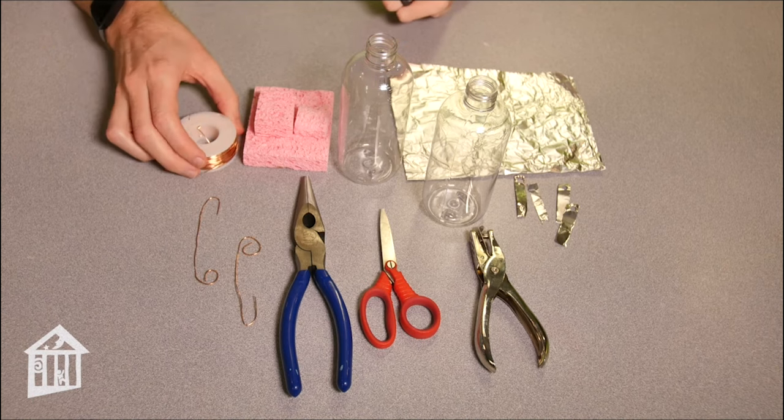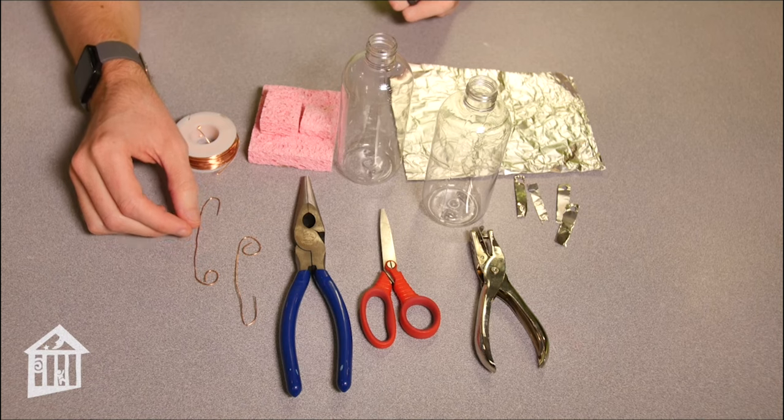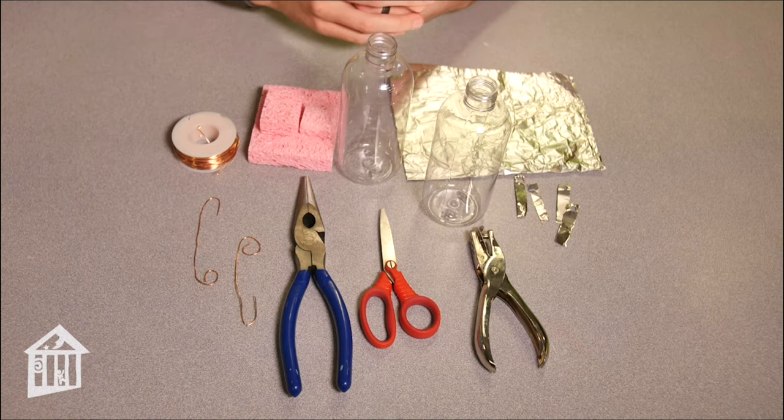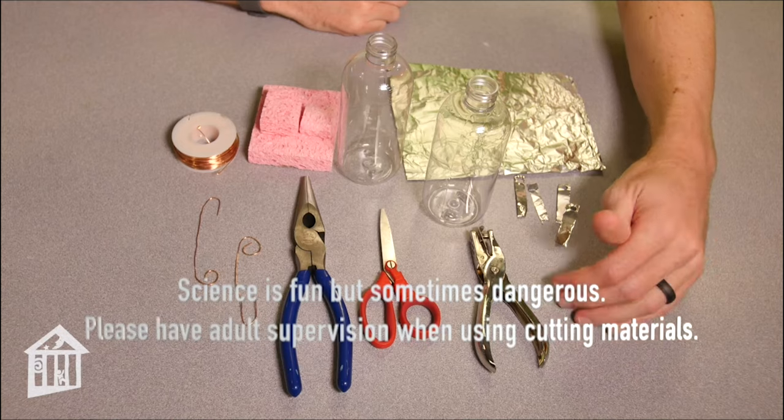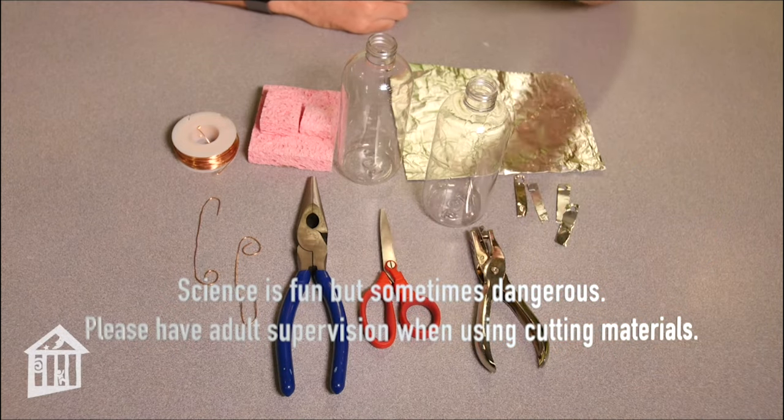And then you'll need some copper wire, which we will use to actually—this is the core of the electroscope. And then you'll need a few different utensils here. You'll need a hole punch, scissors, and wire cutters.